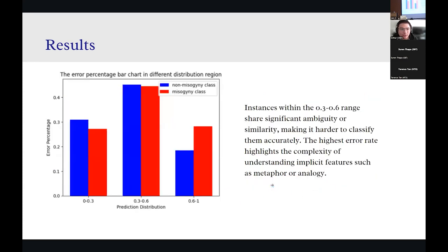The second part of the results section, we carry out a simple error analysis by plotting the error percentage bar chart based on the different confidence intervals of the model's prediction. You may notice that there is a relatively high error percentage in the confidence interval from 0.3 to 0.6. After a bit of investigation, we find out that it's because the instances within this range often share significant ambiguity and similarity, making it harder for the model to classify them accurately. The highest error rates here actually highlight the complexity of understanding implicit features, such as metaphor or analogies.